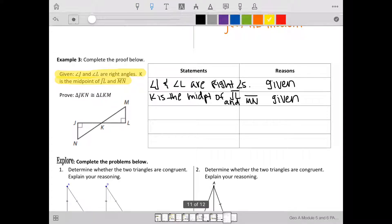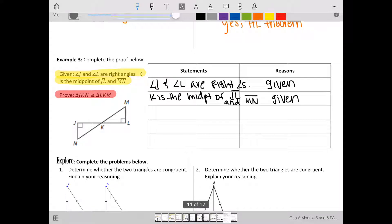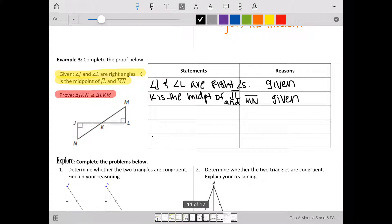And what we are trying to prove, that the two triangles are congruent, always goes in the bottom box. Now, we just have to figure out what goes in the middle.